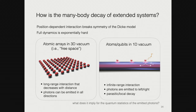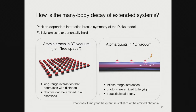I'm going to talk about two different types of systems. The first is atomic arrays of different dimensionality in 3D vacuum — free space — with long-range interactions that decay with distance. The challenge is that photons can be emitted in all directions. The second is atoms and qubits in a 1D vacuum — either superconducting qubits coupled to transmission lines or ensembles of atoms coupled to the evanescent mode of a fiber — where the interaction range is infinite because the photon is guided, but photons can only be emitted left or right, with some parasitic local decay. I'll discuss whether these systems display a superradiant burst and what this implies for the quantum state of the emitted photons.